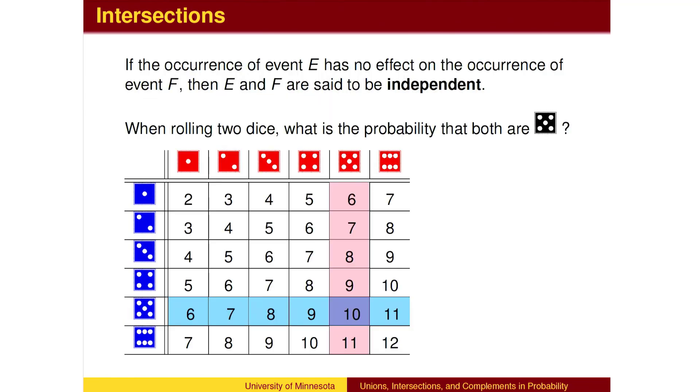When two events are independent, we can calculate the probability of two events both happening. For example, when rolling two dice, what is the probability that both are 5? The key word here is AND. What is the probability that the blue die is 5 AND the red die is 5? We see here the one row that the outcome must be in and the one column that the outcome must be in, giving us one success in 36 chances.